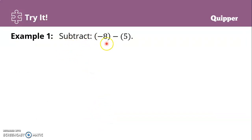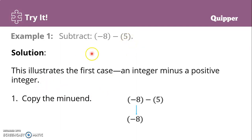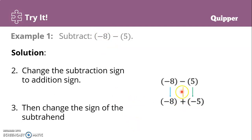Let's subtract negative 8 minus 5. This is an example of the first case — we have an integer, negative 8, minus a positive integer. So negative 8 minus 5. We copy the minuend, which is negative 8, and then we change the subtraction sign into a positive or addition sign.